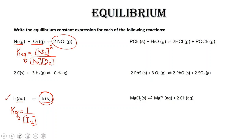Let's do one more together: 2 moles of lead sulfide reacts with 3 moles of oxygen to form 2 moles of lead oxide and 2 moles of sulfur dioxide. Our K equilibrium is going to be equal to the concentration of our products. Notice that we cannot include lead oxide because it is a solid, so we put SO2 raised to the power of 2. For our reactants, we cannot put lead sulfide because it is also a solid, so we include O2 raised to the power of 3.